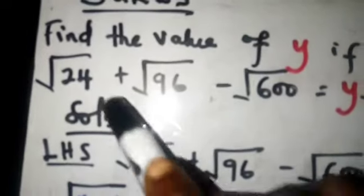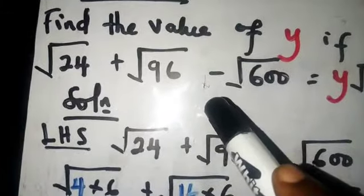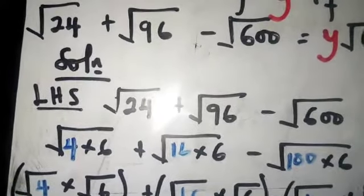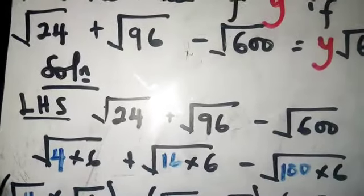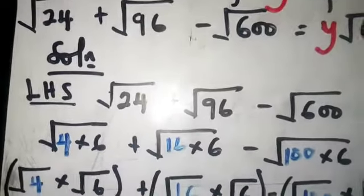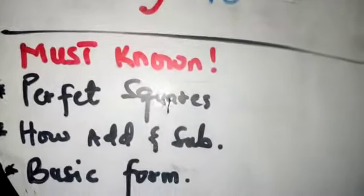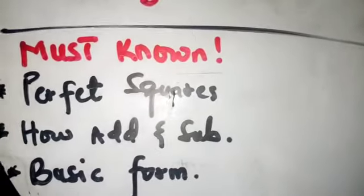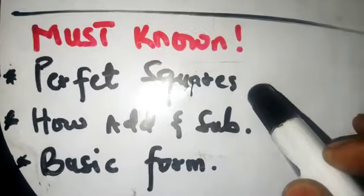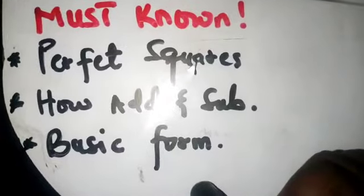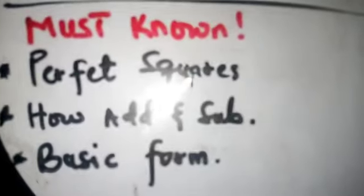You need to know how to add and subtract surds — that is most important. If you haven't watched the video on how to add, subtract, and multiply surds, consider watching that first. In summary, the tools you need are: knowing perfect squares, how to add and subtract surds, and the basic form of a surd.